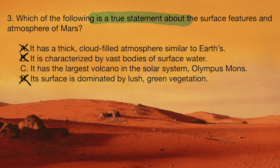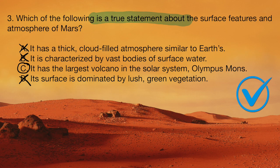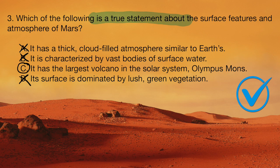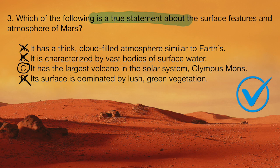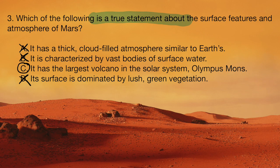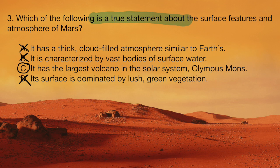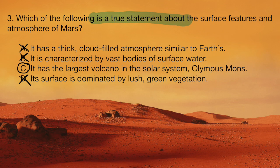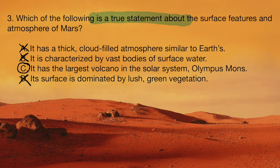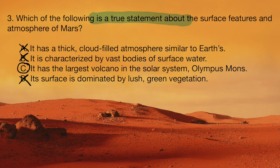And so I know it's not A. So even if we didn't know that Mars has the largest volcano in the solar system, by process of elimination, we're going to find that this is actually true. Mars actually does have the largest volcano, and it is called Olympus Mons.